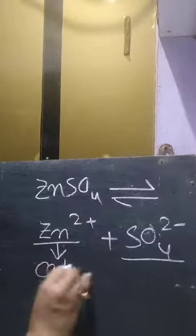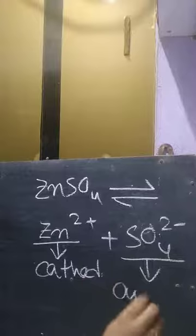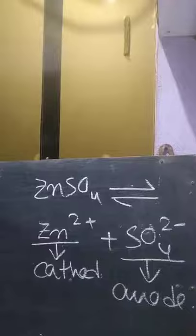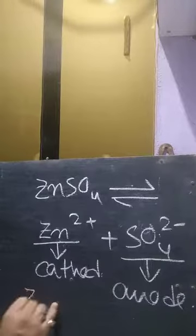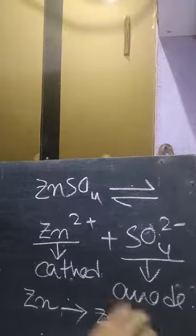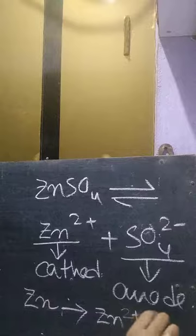Zinc has the tendency to become zinc ions. If we electrolyze this part, it will produce Zn²⁺ and SO₄²⁻ — Zn²⁺ is the positive cation and SO₄²⁻ is the negative anion. Cations go to the cathode and anions go to the anode. Zinc has the tendency to lose two electrons, so zinc comes out as Zn²⁺ by releasing two electrons.